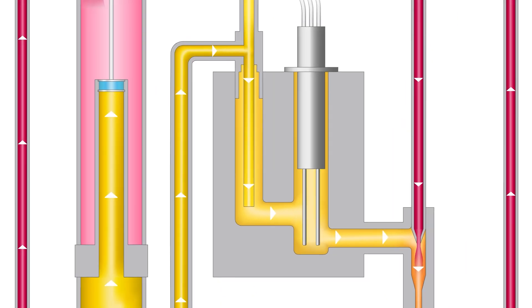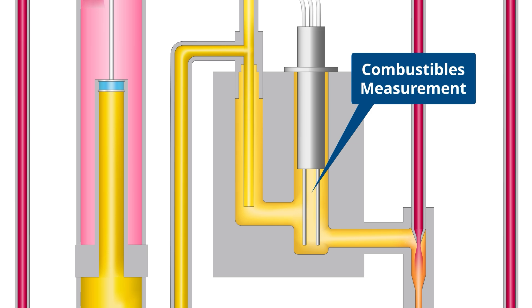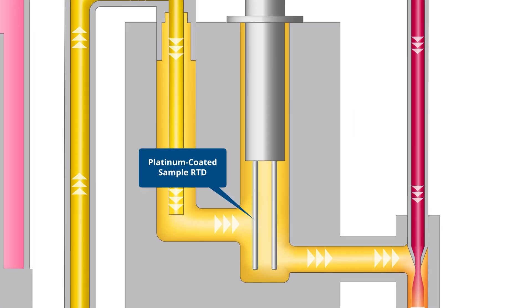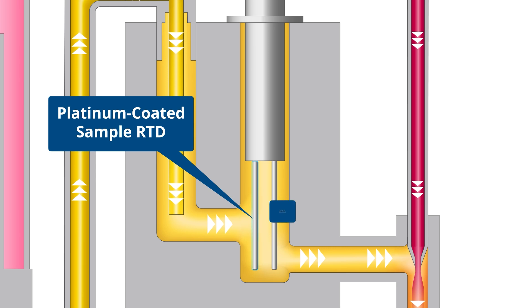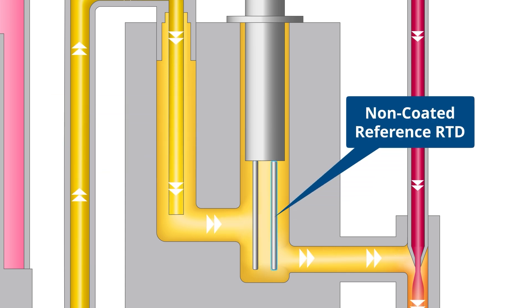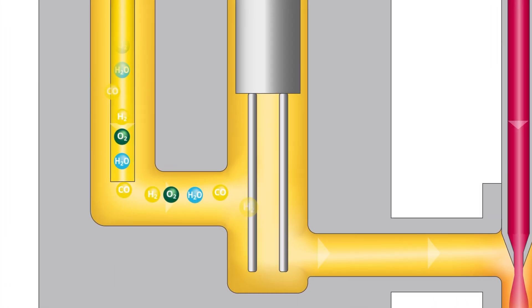A calorimetric combustible sensor measures the combustibles in the process exhaust gas. The sensor consists of a platinum-coated sample RTD and a non-coated reference RTD. The combustibles in the sample gas react with the sample RTD.